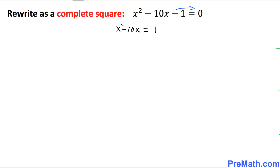In our next step, we are going to complete the square. To complete a square, I want you to just put down this square over here — this x minus 10 part only. Let's go ahead and put down x minus 10 right up here. And the next step is: whatever this second number, 10, we divide it by 2.